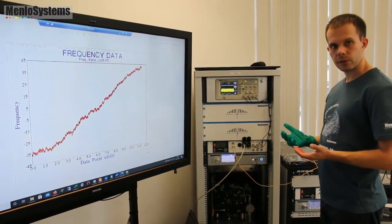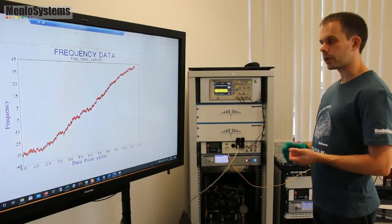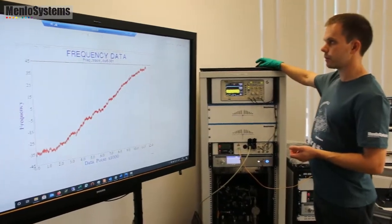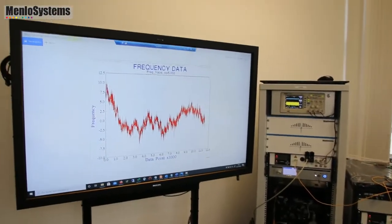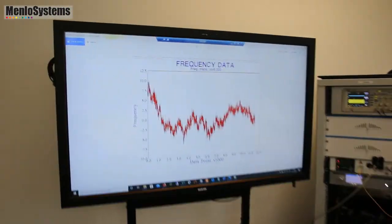But this can very easily be compensated for. Measured by a frequency probe and then compensated for. So this we've done on the next slide. So here the linear drift is subtracted.